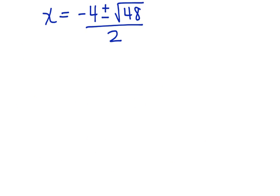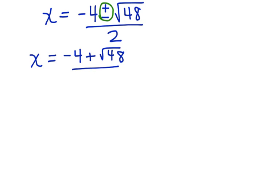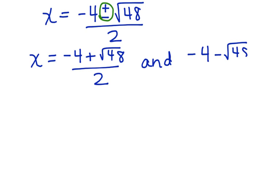Now, because we have a plus and a minus here, we actually have two equations, so x could be two possible values. x is equal to negative 4 plus the square root of 48 divided by 2, and x is equal to negative 4 minus the square root of 48 divided by 2.